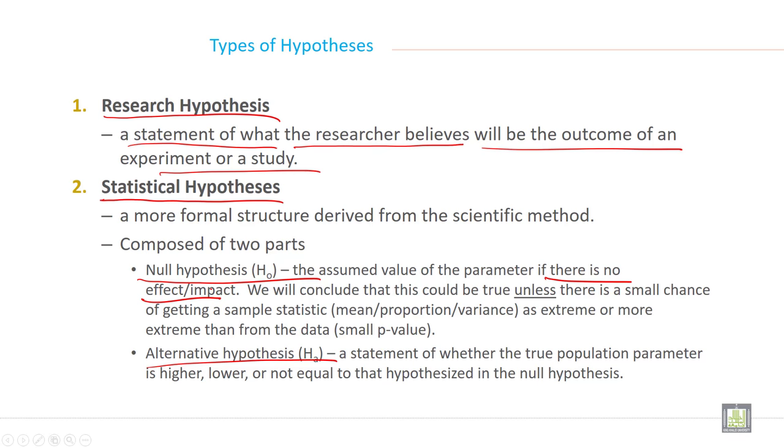We will conclude that this could be true unless there is a small chance of getting sample statistics like mean, proportion, and variance as extreme or more extreme than from the data with small p-values. We will come to the p-value later.